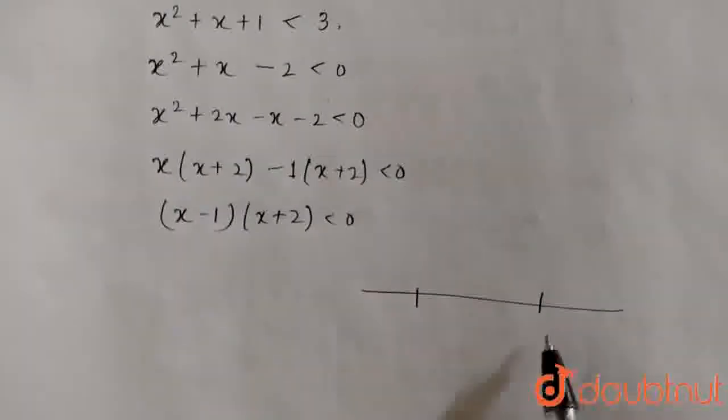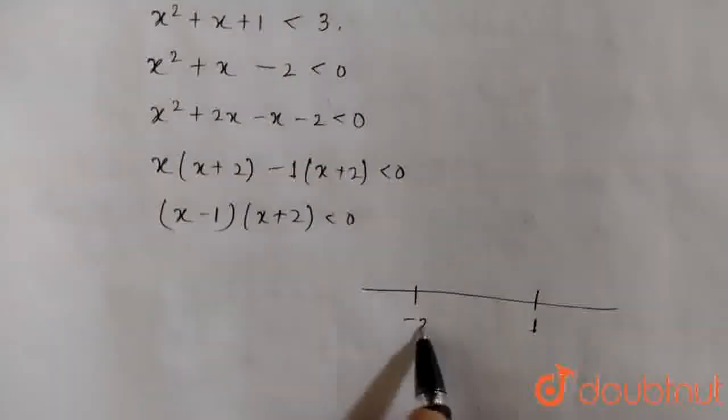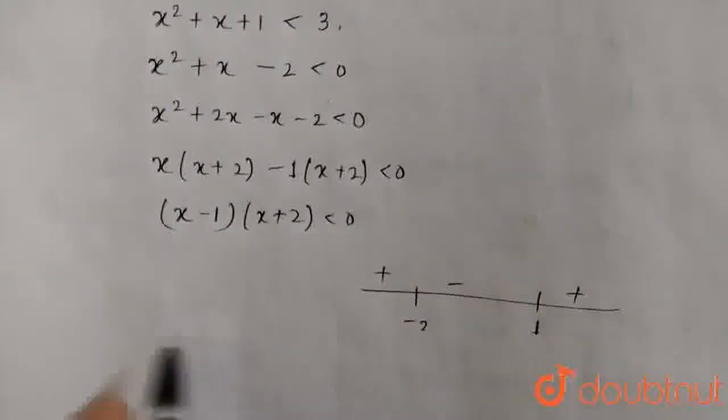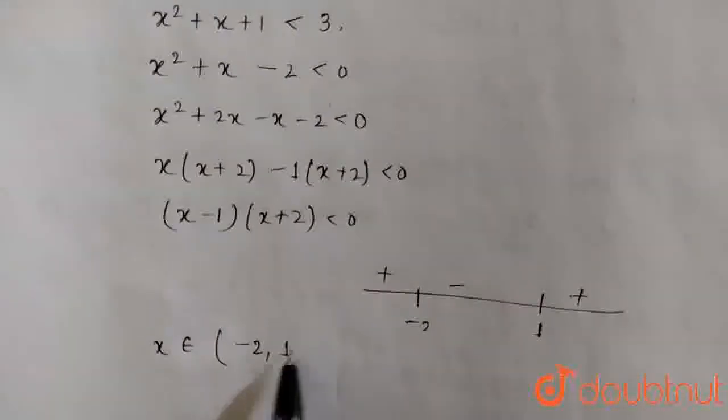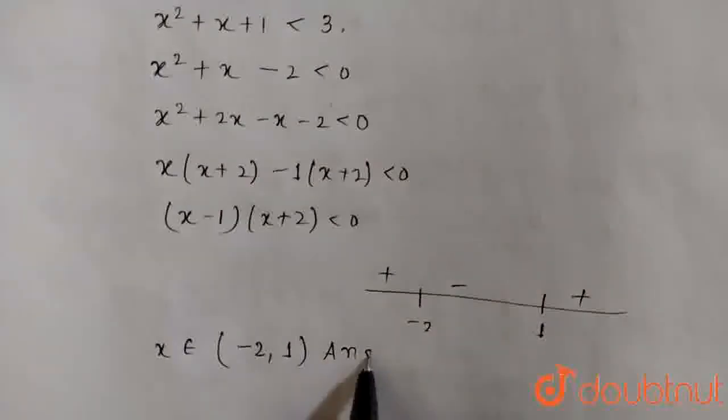Drawing the number line here, we can write 1, minus 2, positive negative positive. So x belongs to minus 2 to 1. This is our final answer.